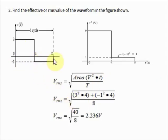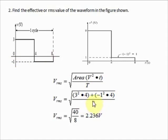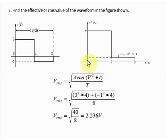The second section has a voltage of −1 V with a duration of 4 seconds, so (−1)² × 4. The total period is 8 seconds. The equation becomes: VRMS = √[(3² × 4 + (−1)² × 4) / 8] = √(40/8) = 2.236 volts. Note that (−1)² = 1, so the negative portion contributes a positive value of 1 volt in the squared diagram.